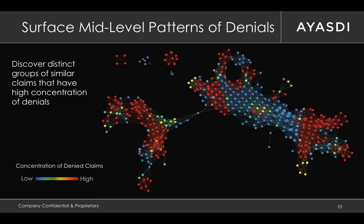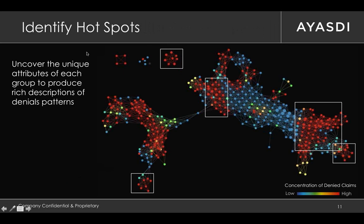Once we find a geometrically distinct, bright-red group, we can immediately discover these mid-level patterns of claims with high concentration of denials. How do we get to the rich description of what the denials pattern is? We look at each of these groups independently. Since we constructed this map using that multi-faceted notion of similarity, we ask: what is it that's causing these claims to be called similar? There's going to be a combination of factors that answers that question — and those several features are going to be what give us that rich description. These similarity maps allow us to identify the mid-level patterns and get to these rich descriptions, and that's the secret to getting beyond the low-hanging fruit.